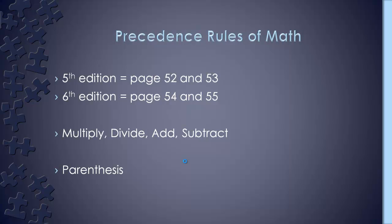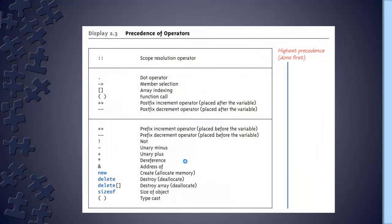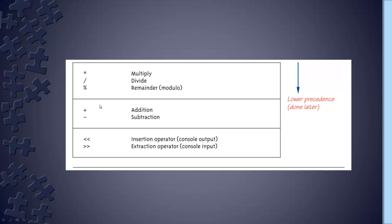The book also covers operator precedence — pages 52 and 53 in the fifth edition, pages 54 and 55 in the sixth. Anything in parentheses is done first. Then we multiply and divide from left to right. Then we add and subtract from left to right. There's a nice chart showing the full precedence of operations that you may want to copy into your notebook.